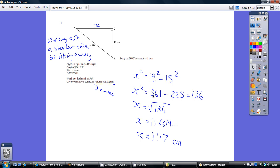So x squared equals, well, what is 19 squared? It means 19 times itself. Using your calculator, you get 361. What's 15 squared? Well, it's 15 times itself, 15 times 15, which is 225. 361, take away 225, gives you 136. So x squared equals 136.